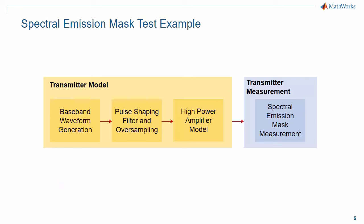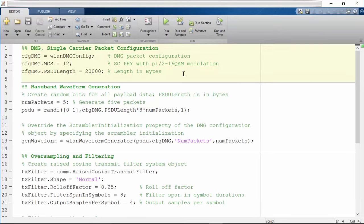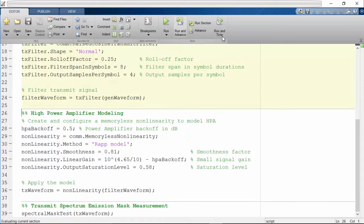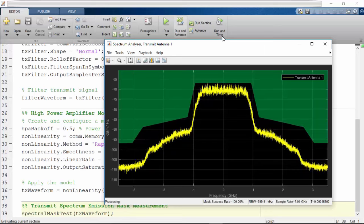In this example, we generate a standard compliant 802.11AD waveform containing five packets. We pass this waveform through a pulse shaping filter and oversample it. Next, we apply a high power amplifier model which introduces in-band distortion and spectral regrowth. Finally, we test that the resultant spectral emissions are within the standard defined mask. First, we create a DMG configuration object and configure it for a single carrier transmission with MCS12. We then use the waveform generator to synthesize a waveform containing five DMG packets. Each packet contains a random payload. Next, we pass the waveform through a raised cosine transmit filter to perform pulse shaping and oversample the waveform. Now we introduce in-band distortion and spectral regrowth by passing the waveform through a high power amplifier model. In this example, a Rapp model is used with a backoff of 0.5 dB. Finally, we evaluate the spectral emission mask of the resultant waveform. Note that out-of-band emissions are within the standard specified mask.